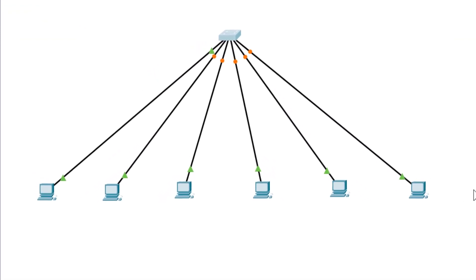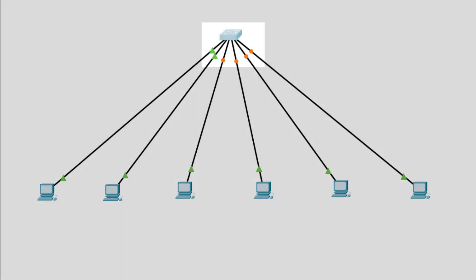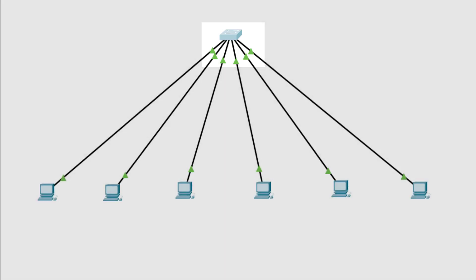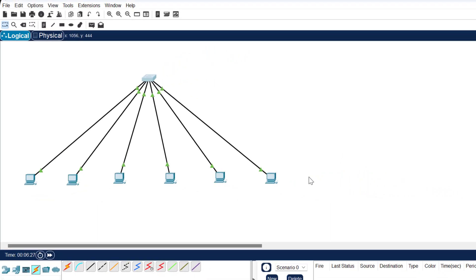All the computers are now ready for communication — you can see they are shown in green. However, the switch is still in orange color, which means it is not ready yet. It takes some time to turn from orange to green, and now it's done — the switch is ready for communication.